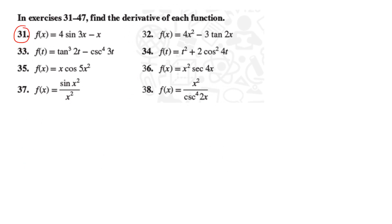Let's solve question 31 and 33 one by one. First we do 31 here. Question 31 is an easy one. f(x) is given to be 4 sin 3x minus x, so it is made up of two functions that are subtracted. We need to find the derivative, meaning we need to find f'(x) or d by dx of this function.